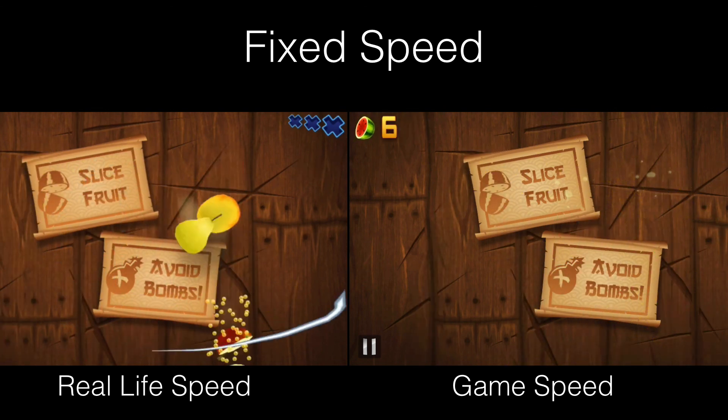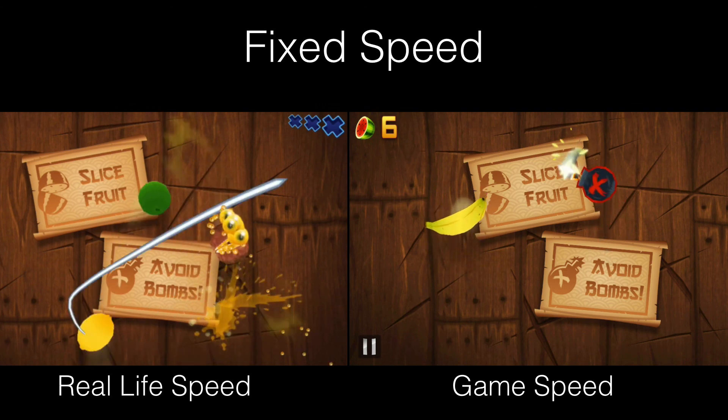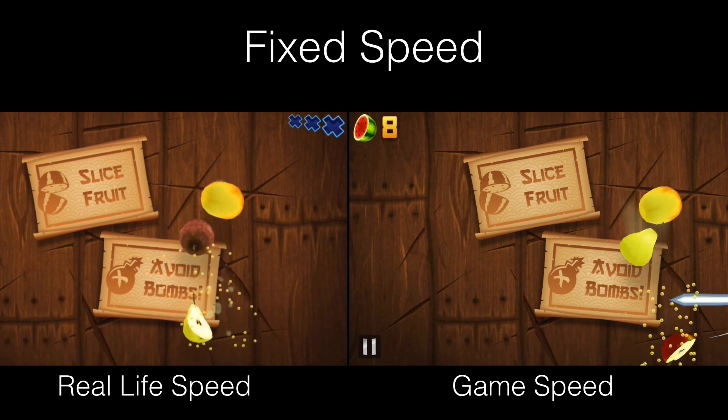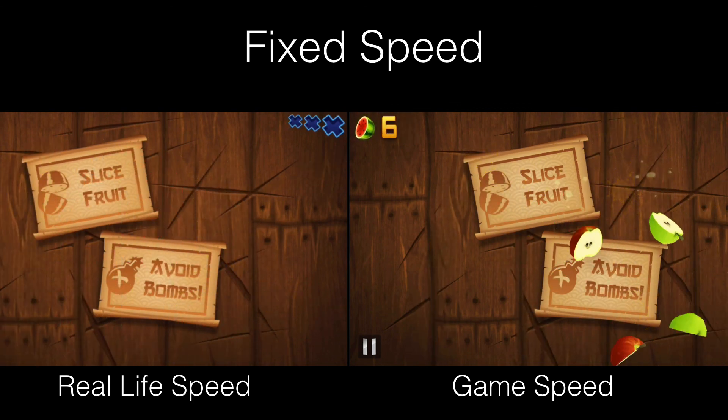So they slow it down so that it makes it more enjoyable to play. No one wants to play a game that's impossible, except for Flappy Birds. And the same thing's true for Angry Birds and a lot of other games. You have to change the physics in order to make it a nice and playable game. So that's Fruit Ninja and the physics of Fruit Ninja.